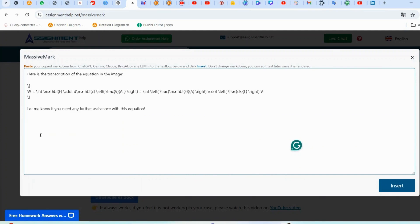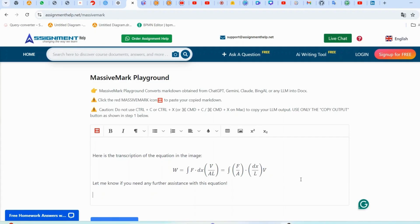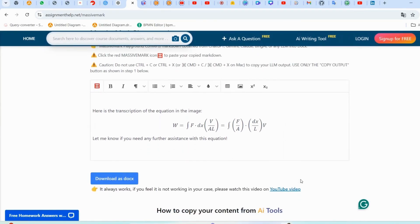It's done. You can now see that your equation which you transcribed from the snip is perfectly visible. Simply click Download as Docs. Your equation will now be perfectly formatted and editable in Word.